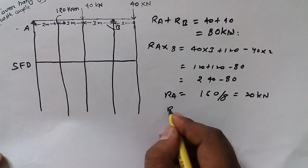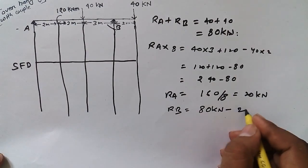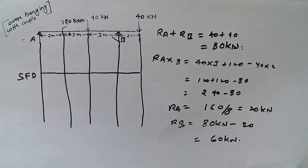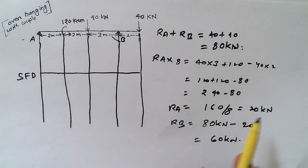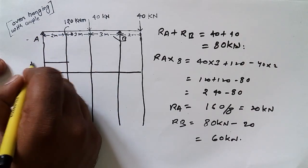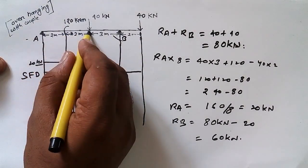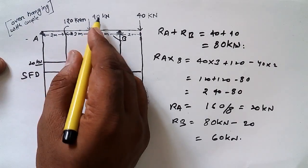Now we need to find Rb. Rb equals 80 kilonewtons minus Ra, which equals 80 minus 20, so Rb equals 60 kilonewtons. Now I am going to draw the shear force diagram. At point A we have a reaction force of 20 kilonewtons, so we draw the diagram starting at 20 kilonewtons.